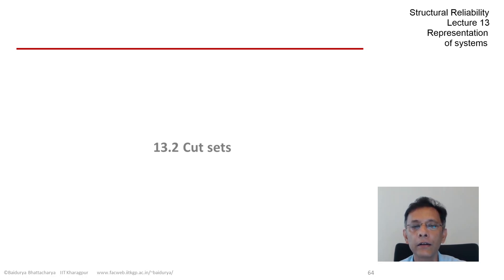The block diagrams were a success-oriented approach to represent the system, and cut sets are kind of failure-oriented in the sense that we try to identify all those elements that must fail in order for the system to fail.